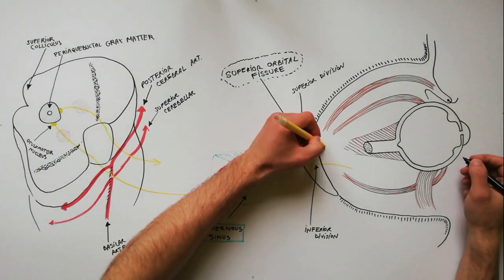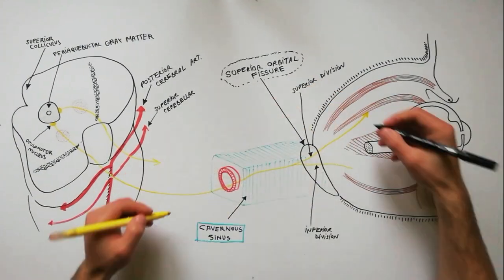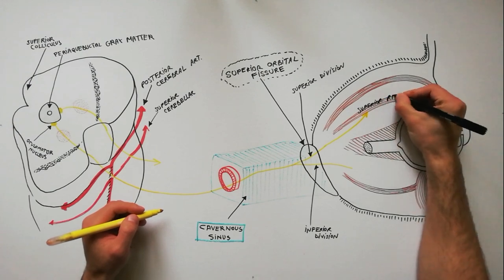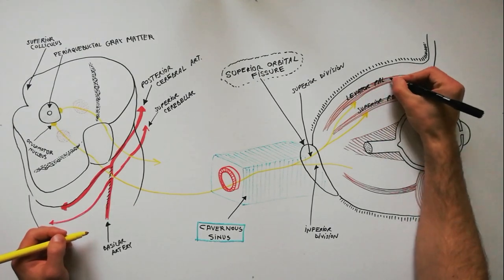The superior division is smaller and supplies the superior rectus muscle and the levator palpebrae superioris muscle.